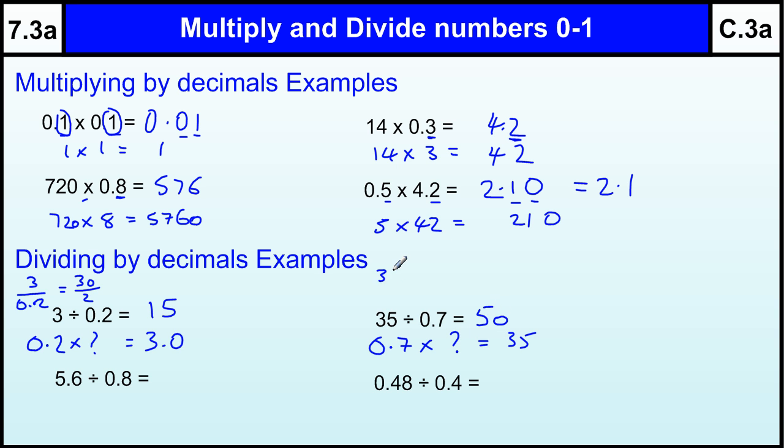Again, if I think about it as a fraction, 35 divided by 0.7, that's 350 divided by 7. 35 divided by 7 is 5, with a 0 on the end to make 50.